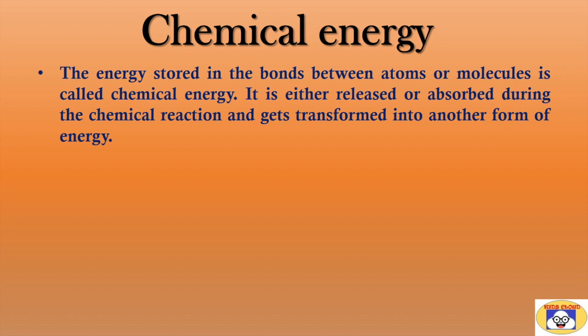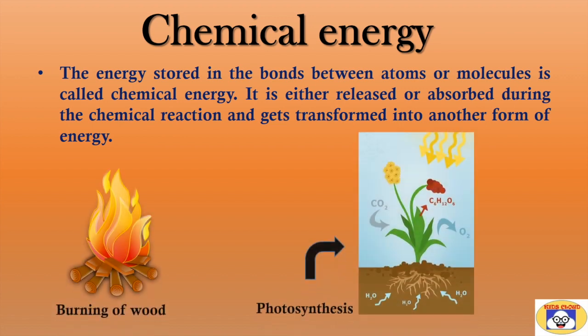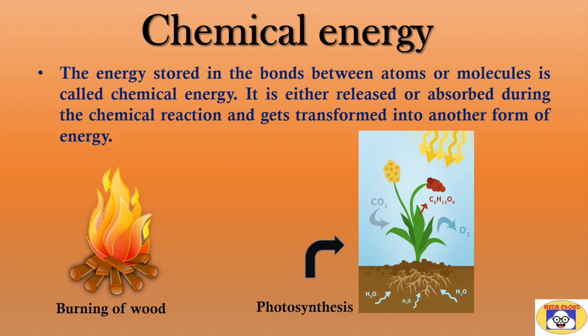The next form is chemical energy. The energy stored in the bonds between atoms or molecules is called chemical energy. It is either released or absorbed during a chemical reaction and gets transformed into another form of energy. Burning of wood is an example of the conversion of chemical energy into heat and light energy. The second example is the process of photosynthesis. Plants prepare food with the help of carbon dioxide, water and sunlight. The carbohydrate produced in the process is an example of conversion of light energy into chemical energy. This energy is used by plants for different activities.